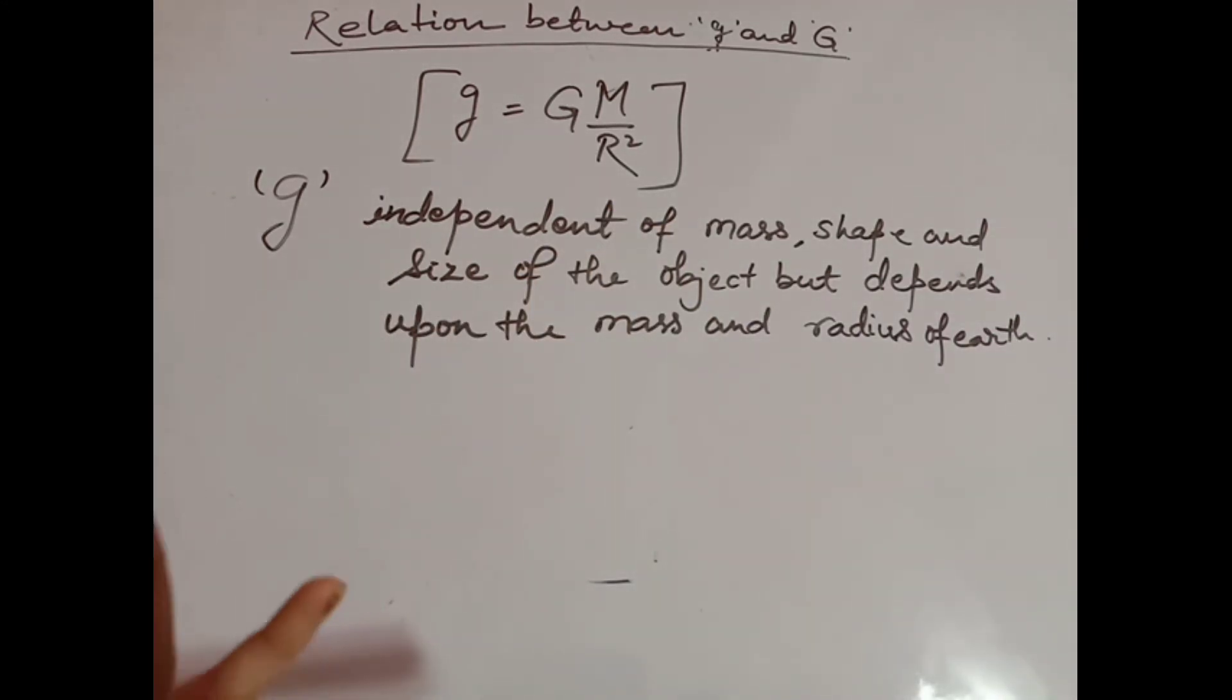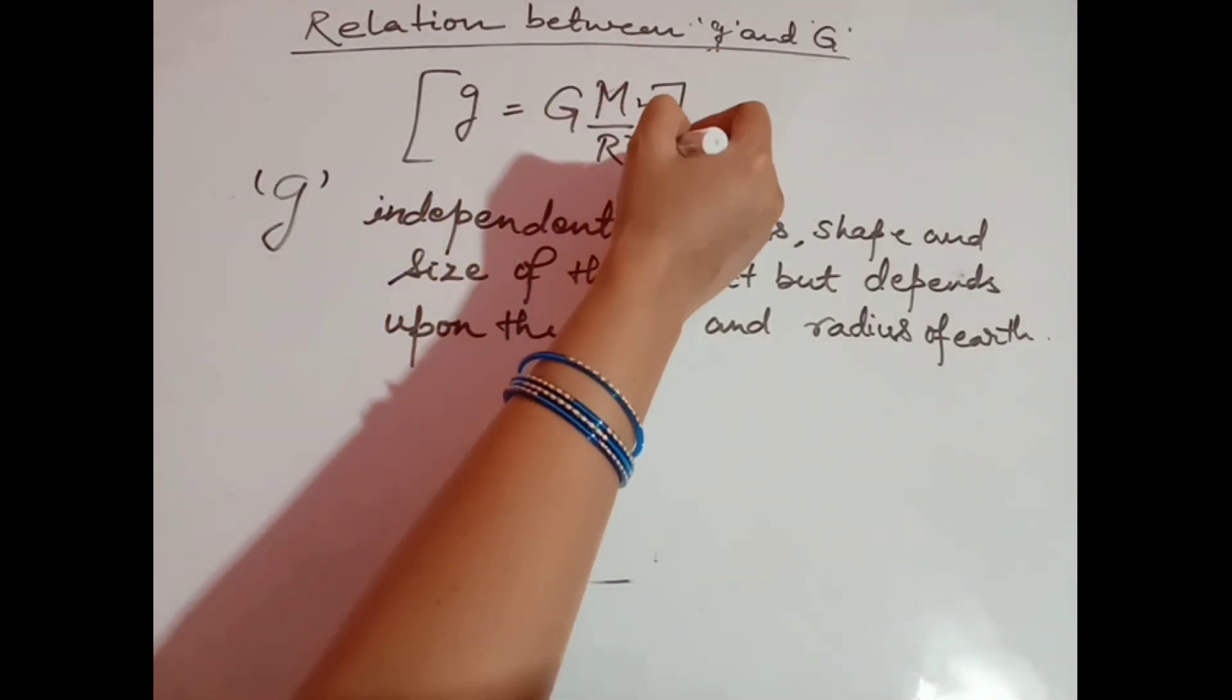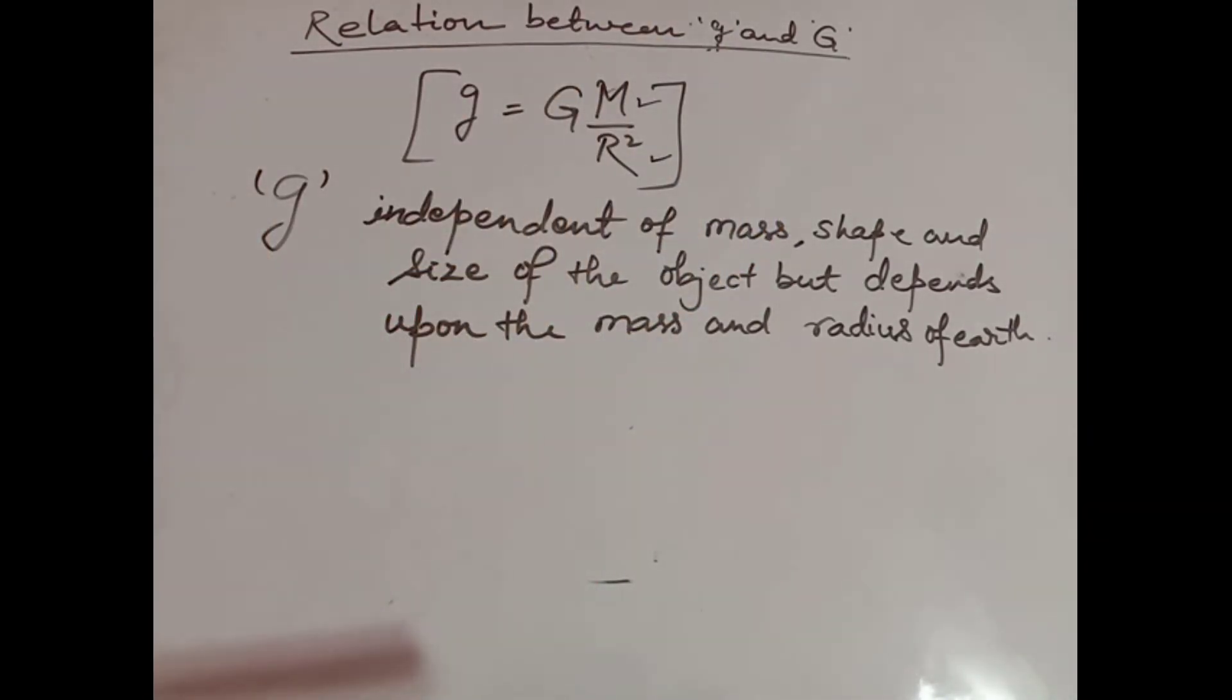It means your value of acceleration due to gravity g is independent of mass, shape, and size of the object, but it depends on the mass and radius of Earth. That's why in free fall I explained that whether the object is heavy or light, in the case of coin and feather, when both drop from a certain height both will reach the ground at the same time.